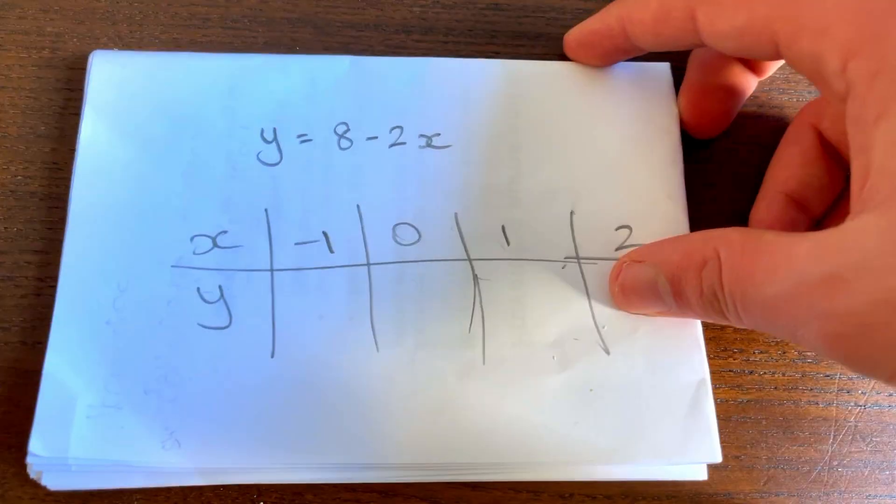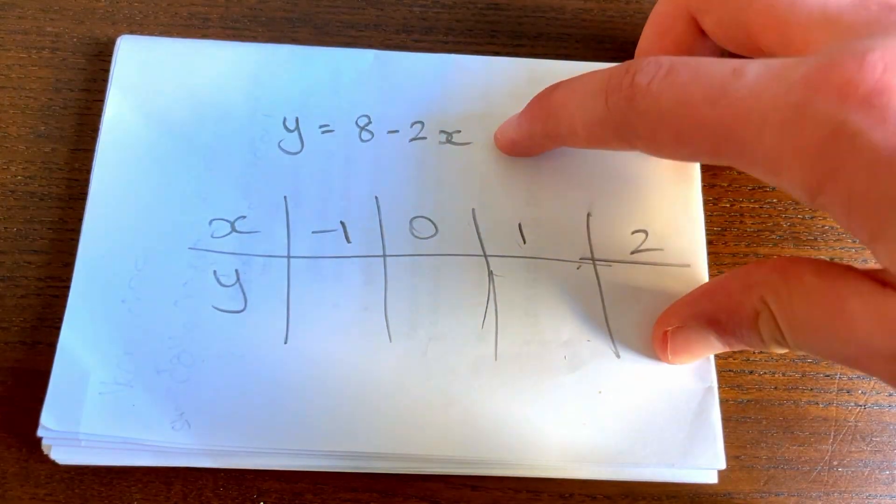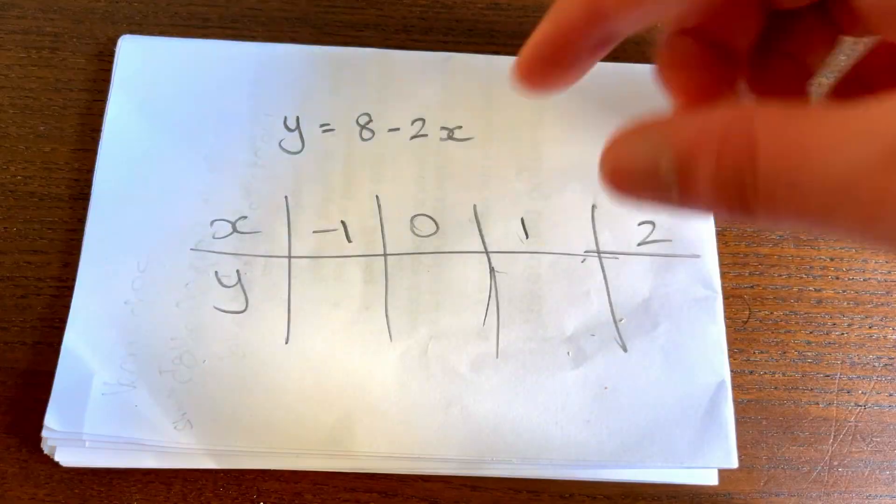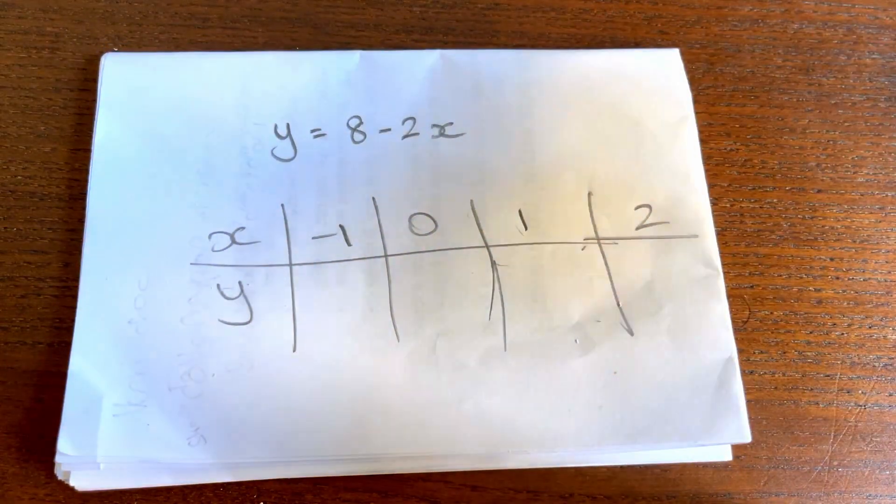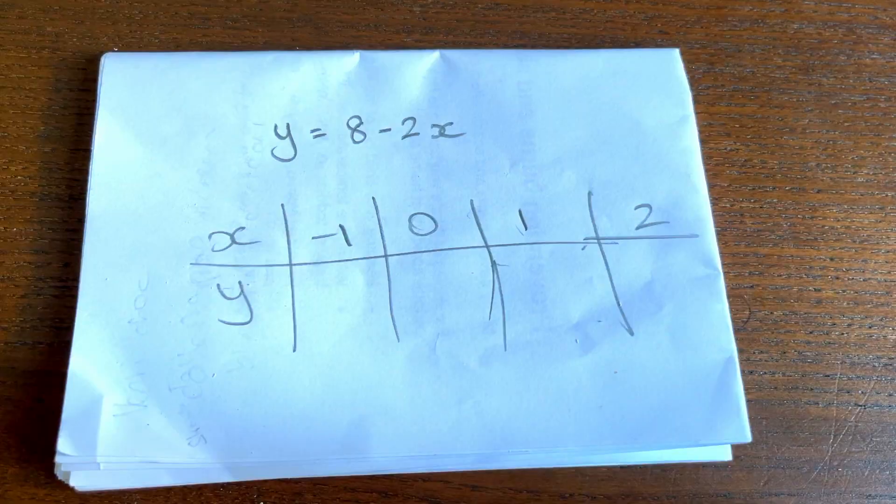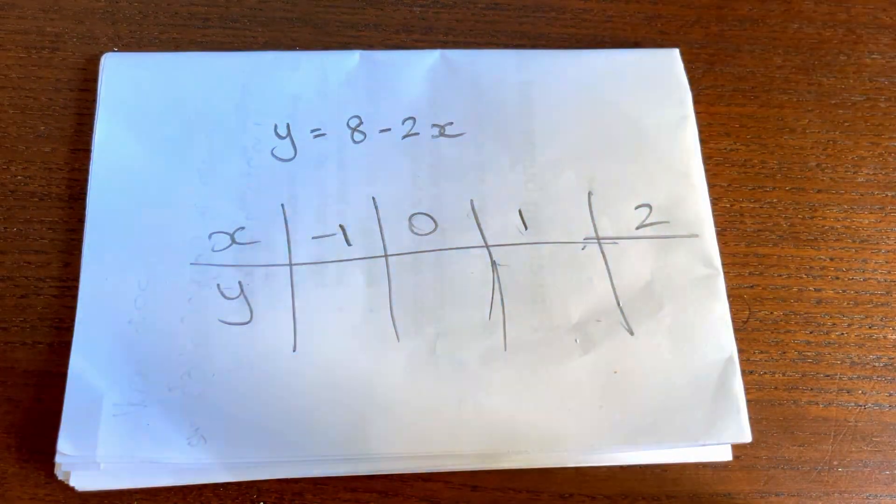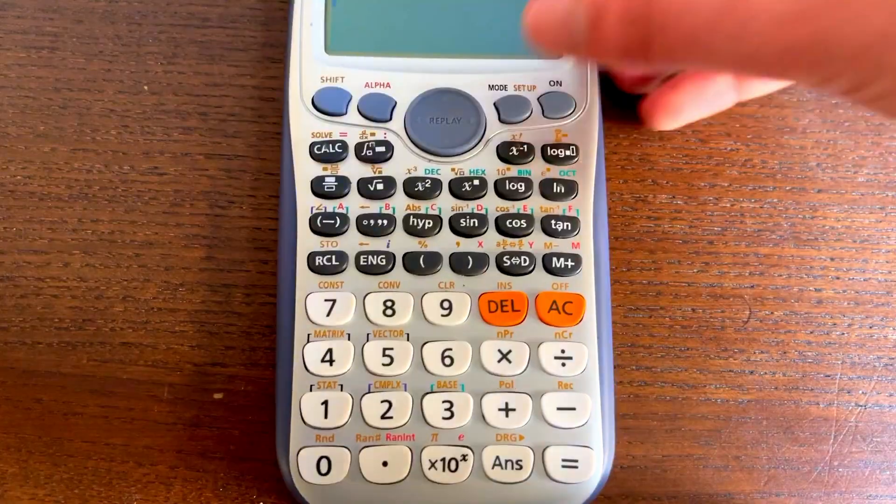Sometimes you may be given equations like these, so y equals 8 minus 2x, and they give you a table of values where you have to complete the y terms. Now this is quite easy, but it can take a bit of time, especially if the table is quite long.